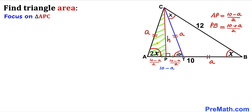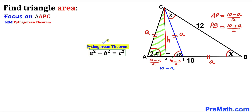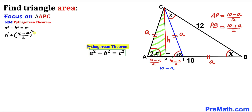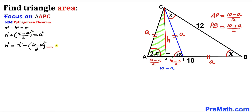Let's focus on right triangle APC, whose side lengths are a, H, and (10 minus a)/2. Applying the Pythagorean theorem: H² + ((10 minus a)/2)² = a². Moving the second term to the right-hand side, let's call this equation number 1.